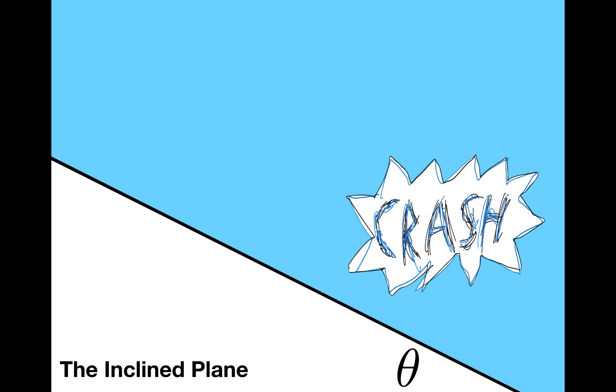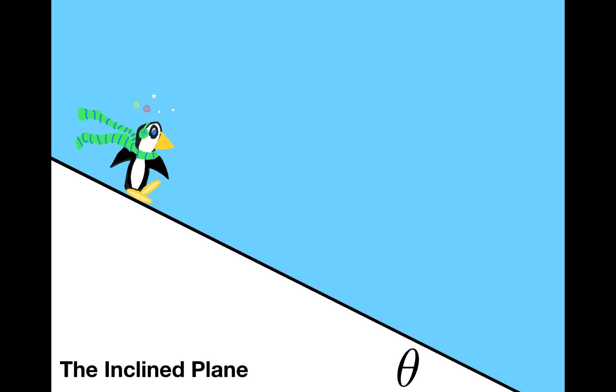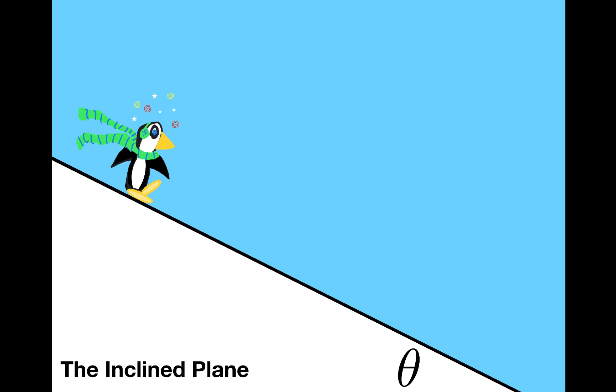The solution to this problem is going to follow my standard recipe: draw the forces acting on the penguin, use Newton's second law, and solve. So let's start with identifying the forces acting on the penguin. There's a gravitational force acting on the penguin that's straight down and equal to mg.